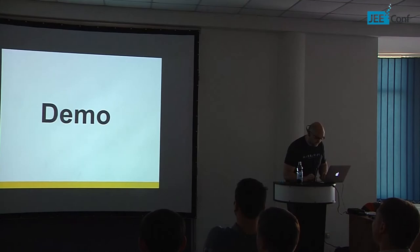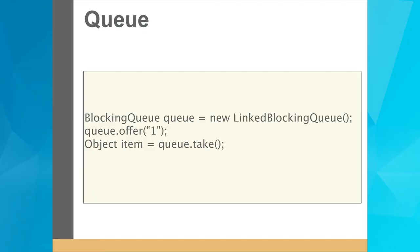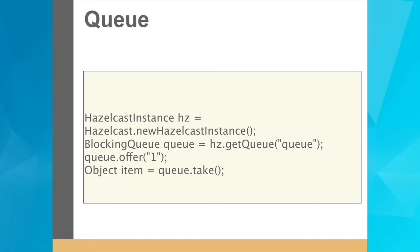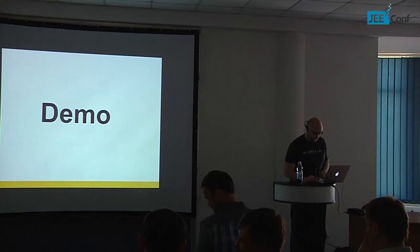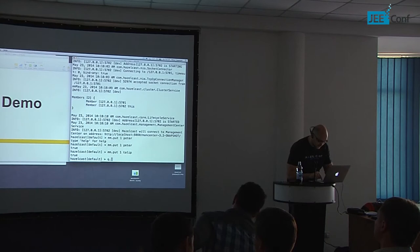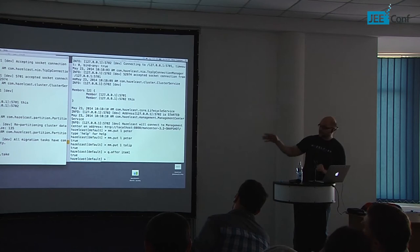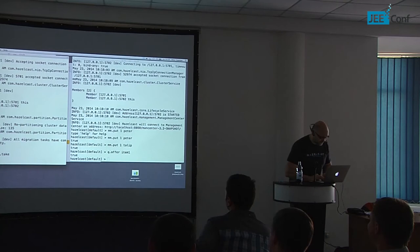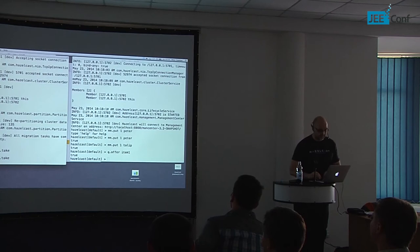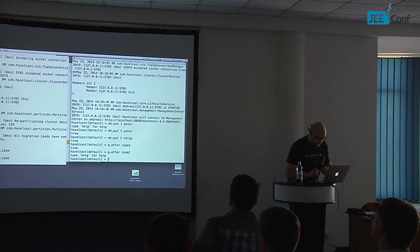We also provide a blocking queue implementation. With a blocking queue it's very easy to create producer-consumer solutions. A LinkedBlockingQueue is not a distributed data structure, so you cannot add data on one machine and take it on another. With Hazelcast it's very easy — you create your Hazelcast instance, get your queue, and use it as a normal blocking queue. In the demo, I take from the queue on one member and the item put on the other member is available. It's a blocking queue — if I do a take without an item available, it blocks, and when I do queue.offer(item2), the blocking take is released.